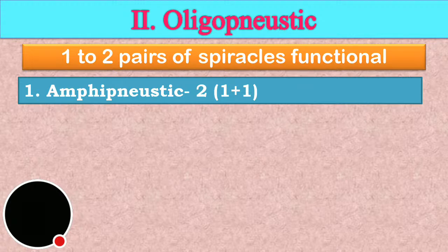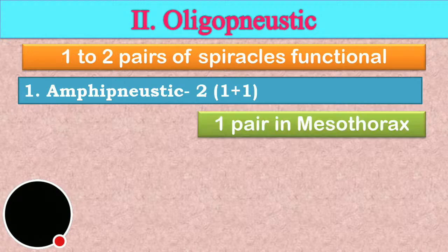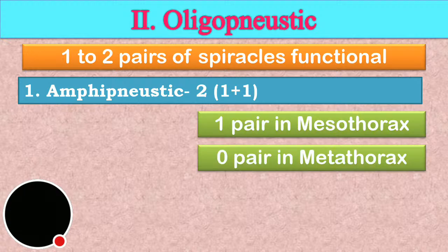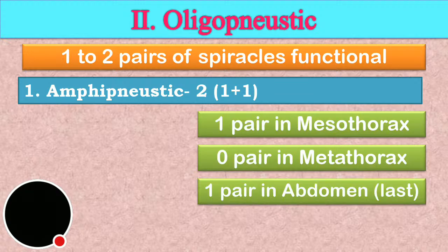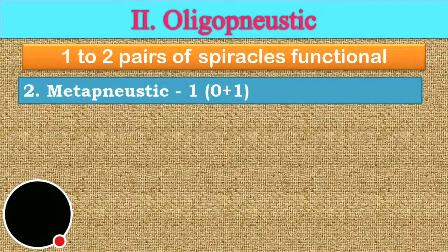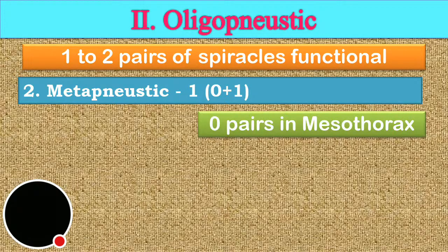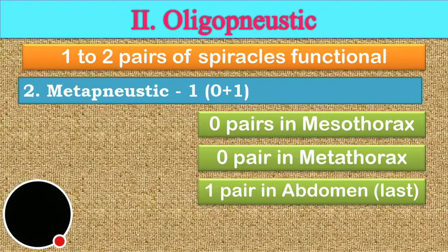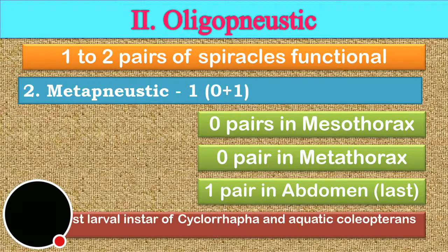In amphinoistic, the working or functional pairs consist of the first pair of thorax — that is mesothorax — and one pair in abdomen. In metanoistic, only one pair is functional, that of the last abdominal segment.